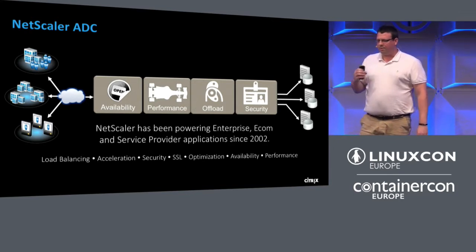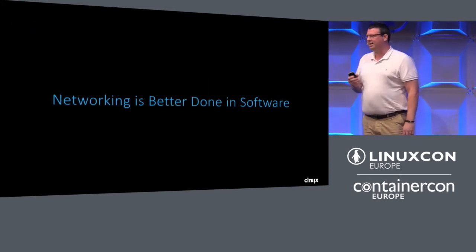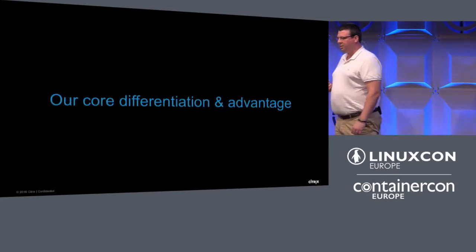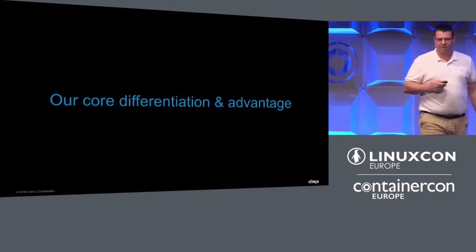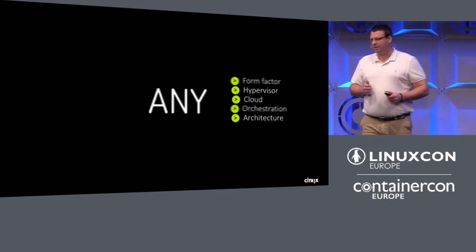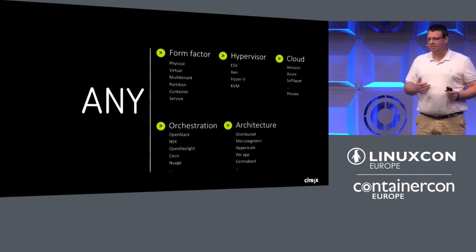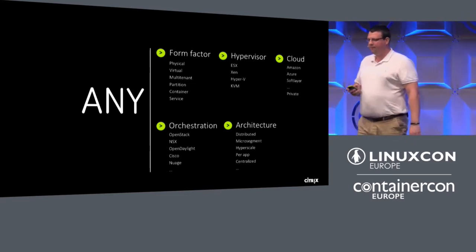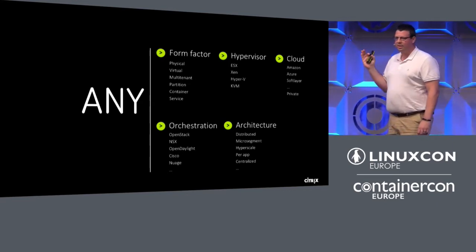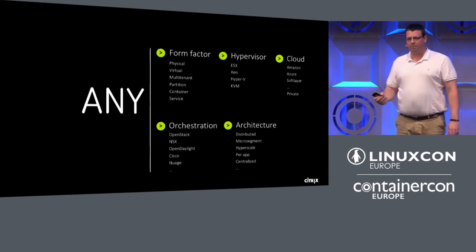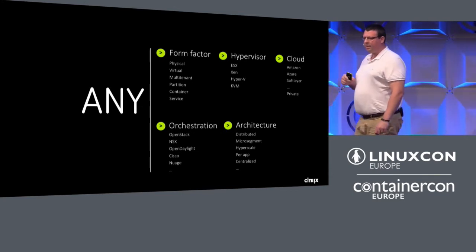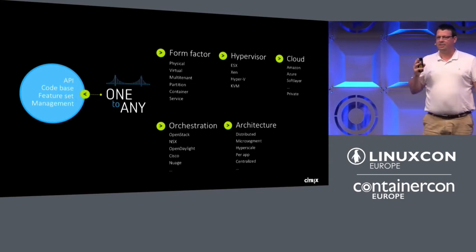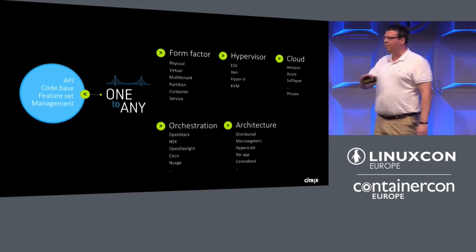The way we feel we've been able to create a very, very flexible platform is because we believe that networking is done better in software — it gives us the edge over our competition. But we believe our core differentiation is the power of any: the fact that we can deliver our technology in any form factor, on any cloud orchestration system, on any public cloud, there is a format that fits, and there's a management tool to run it as well. Every highlighted option you see is a choice you have to make — which form factor, which type of architecture. We also give you the power to change your mind and switch from one to the other, because we have a single API, a single code base, a single feature set, and a single management infrastructure across all form factors. Our real differentiator is the power of one to any.